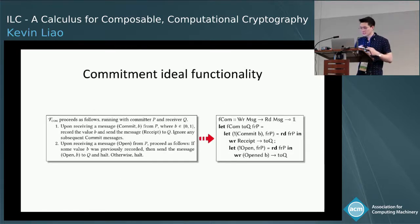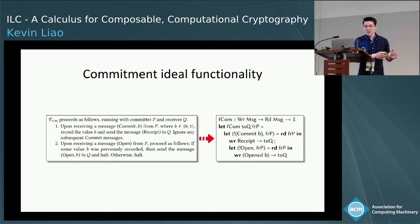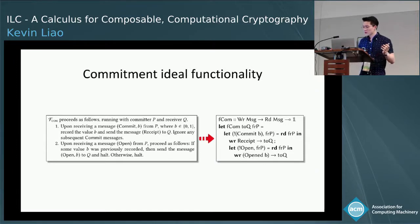Here's an example that does type-check: a commitment ideal functionality. An ideal functionality is a program for a trusted third party that performs some cryptographic task securely by triviality, and we use it as our security specification — we judge the security of a protocol by checking that it roughly behaves the same as the ideal functionality. The function fcom takes as a parameter a read endpoint FRP. We're actually using the read endpoint twice, but this is fine because we rebind FRP after each use, so we are using it in an affine way.